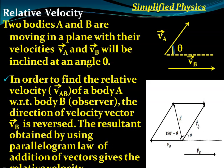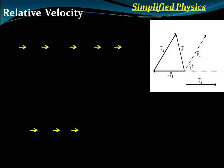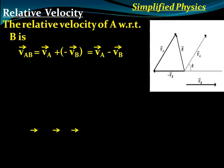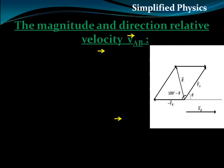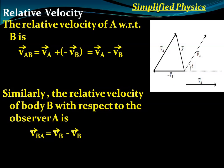The relative velocity of A with respect to B equals V_A plus (minus V_B), that is V_A minus V_B. Similarly, the relative velocity of B with respect to A is V_B minus V_A. We can apply both the parallelogram law and the triangle law of vector addition to find these relative velocities.